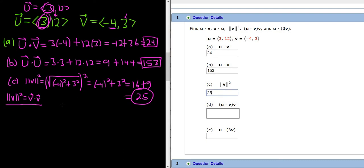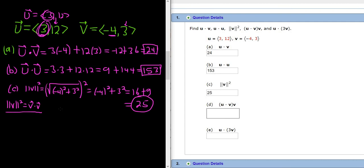Alternatively, you could just work out the magnitude of v. So we could have done this and gotten square root of 25, which is 5. And then you just square the answer and you get 25.